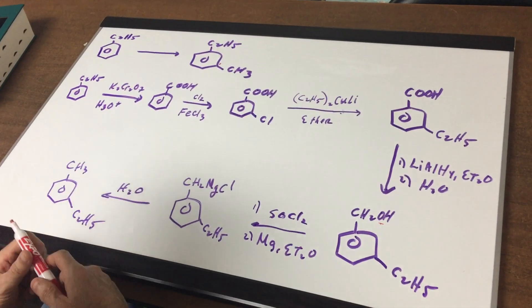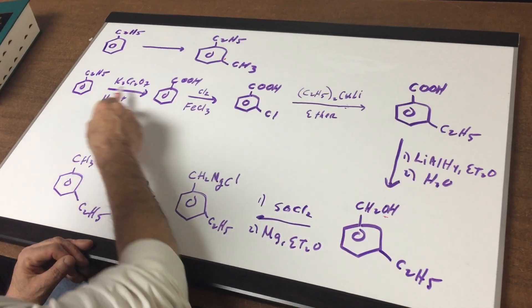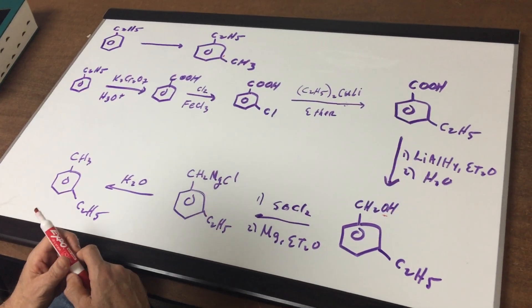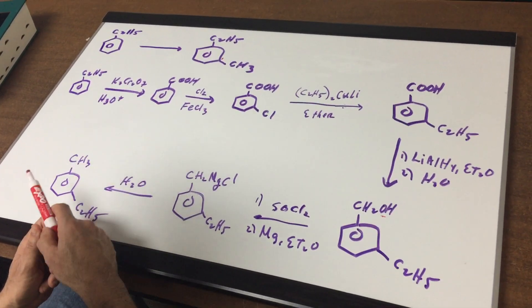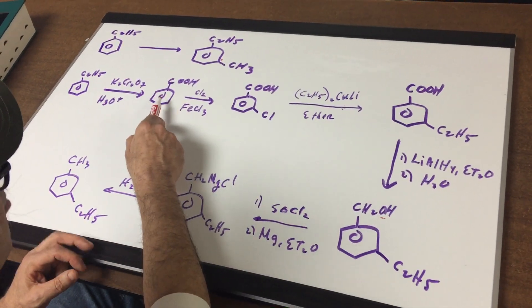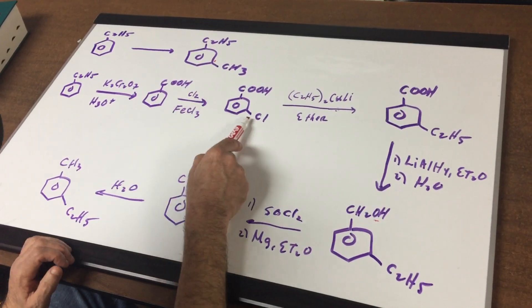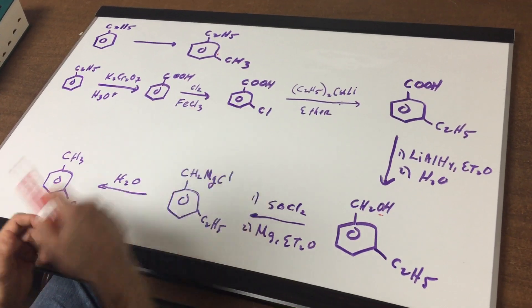So watch what I do and you want to make sure you know all these reactions for the DAT exam. In the first reaction, I oxidized the side chain with potassium dichromate into benzoic acid. Now that I've got a meta director on the ring, I'm going to add the chlorine and that will go to the meta position.